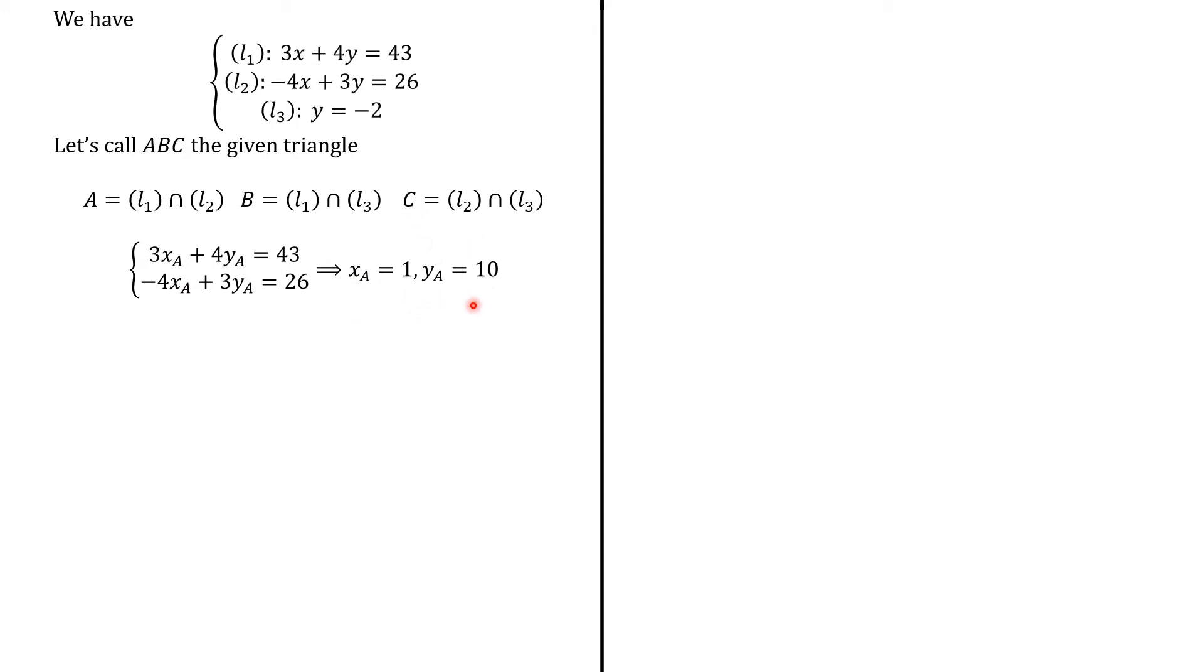We do the same for B and then xB is 17 and yB is minus 2. And again, for C, xC is minus 8 and yC is minus 2. So, we have those coordinates for the points ABC.